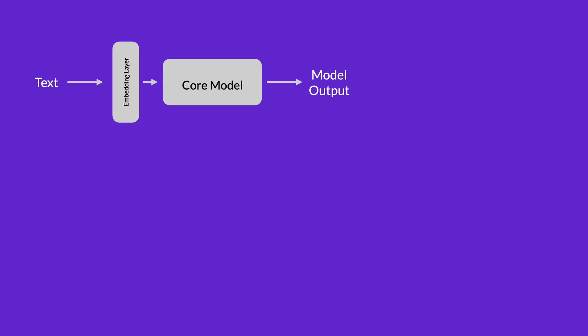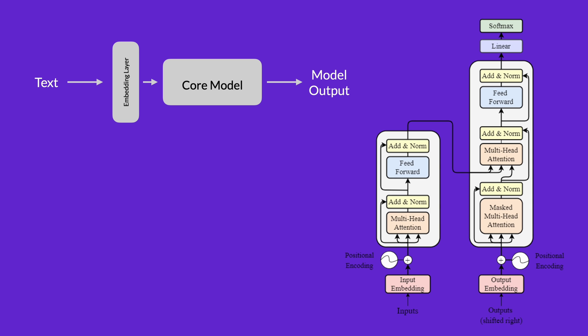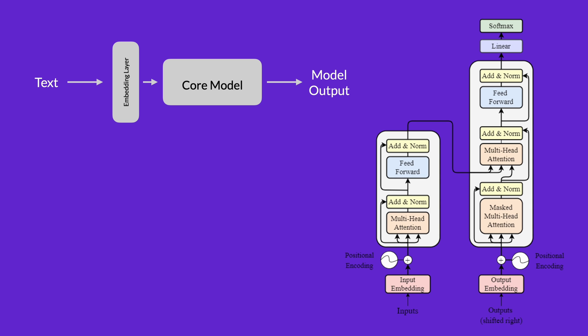The transformer architecture, for example, does exactly this. Before the core of the model — before the encoder and the decoder — it has an embedding layer to take text and turn it into numbers. If you would like to learn more about the transformer architecture and how that model works, you can check out our video on transformers.